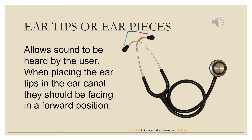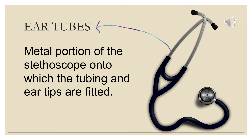The next part is the ear tubes. They are clearly labeled in the diagram of the stethoscope. The ear tubes are the metal portions of the stethoscope onto which the tubing and the ear tips are fitted.